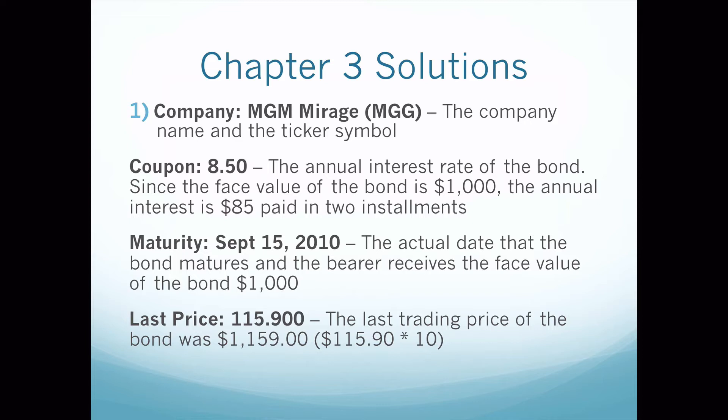The company was MGM Mirage, and the bond ticker symbol was MGG. For the coupon, it was 8.50, and what that is — the coupon is the annual interest rate of the bond. Remember that a bond has a face value of a thousand dollars, so you multiply 8.5% by a thousand dollars and you get eighty-five dollars. So a thousand times 0.085 equals eighty-five.